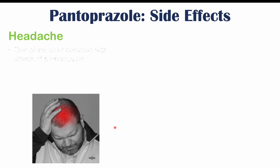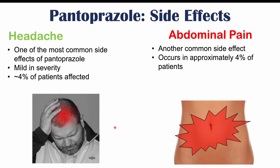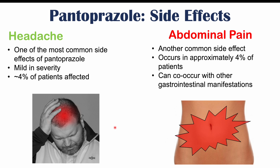The side effects we're going to talk about are more specific to pantoprazole use but they can apply to other PPIs like omeprazole as well. The first side effect is headache, which is one of the most common side effects of pantoprazole use. They're generally mild in severity and can occur in up to four percent of patients. Abdominal pain is also another common side effect, occurring in approximately four percent of patients, and can co-occur with other gastrointestinal manifestations.